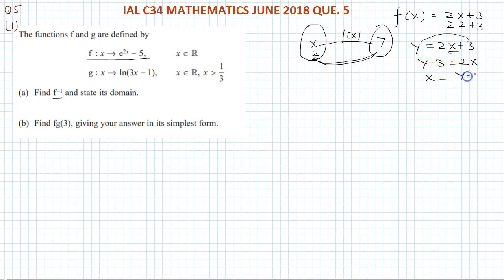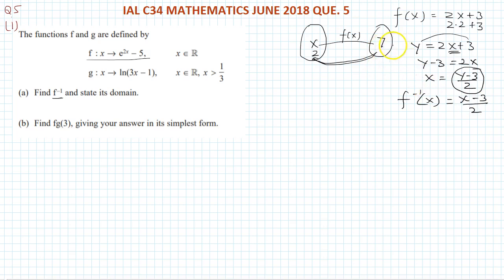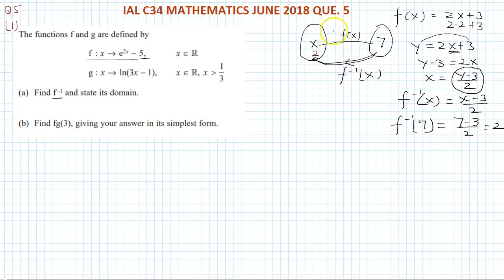So y - 3 = 2x, which gives x = (y - 3)/2. This is the inverse function, but we write f⁻¹(x) = (x - 3)/2. Checking: f⁻¹(7) = (7 - 3)/2 = 4/2 = 2. So that is how we define the inverse function.